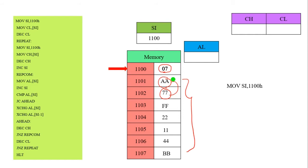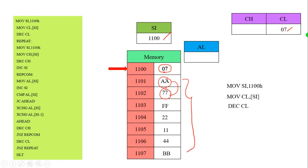The CL register is used to control how many times the comparison operation will take place. We move the SI value — that is the 07 value — into the CL register. Then we perform a decrement of the CL register. The CL register's value goes from 07 to 06. MOV SI, 1100H reinitializes the pointer, and this memory location contains 07 which is moved into the CL register.